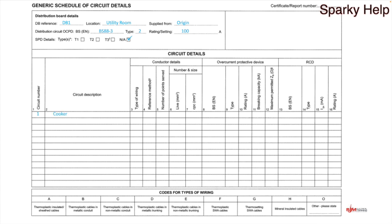Then whatever the description happens to be — I'm going to make something up and go for a cooker. Type of wiring: this is column number three where you can see the codes are down the bottom. It's the information that is put on here, so whatever the type of wiring happens to be. I'm going to go for a twin and earth cable — a thermoplastic insulated and sheathed cable — so I'm going to put in type A.